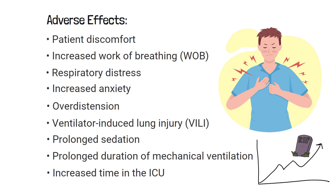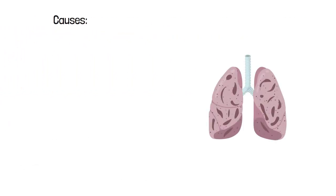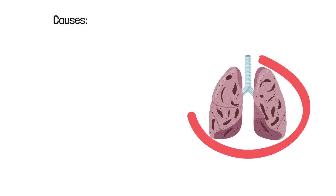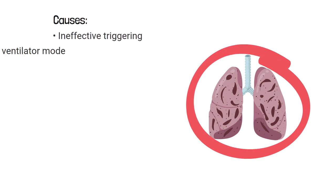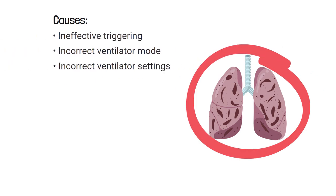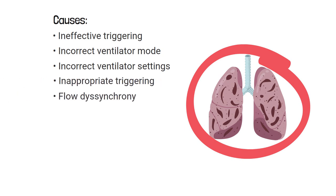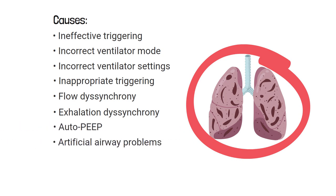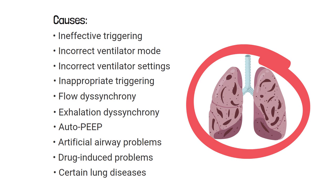Some examples of common causes of patient-ventilator asynchrony include: ineffective triggering, incorrect ventilator mode, incorrect ventilator settings, inappropriate triggering, flow dyssynchrony, exhalation dyssynchrony, auto-PEEP, artificial airway problems, drug-induced problems, and certain lung diseases. Asynchrony can occur due to several other causes as well — these are just a few of the most common examples.